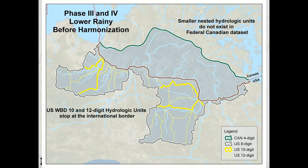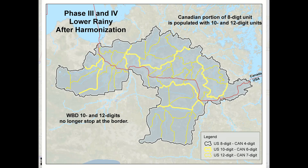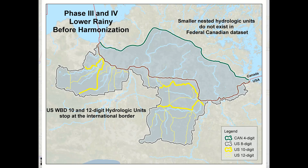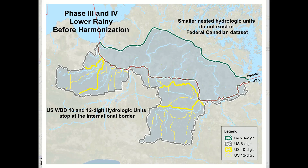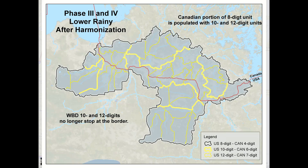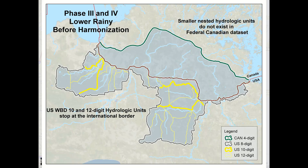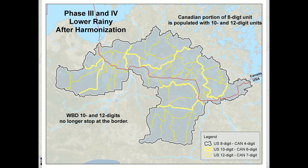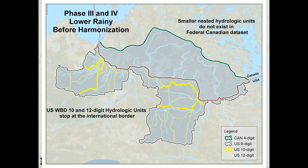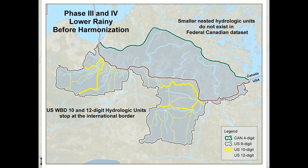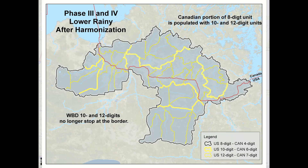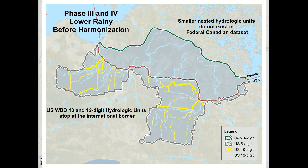Phase 3 includes the development of two additional nested levels of drainage areas within the cross-border 8-digit hydrologic units. These levels already exist within the WBD as the 10- and 12-digit hydrologic units, but are new units for Canada. Existing units within the U.S. are reviewed, modified, and updated where necessary to harmonize with the new units being developed in Canada. Phase 4 is the development of attribution codes and names for the two additional nested levels of drainage areas. Both phases are still in progress and will be incorporated into the WBD as they are completed.